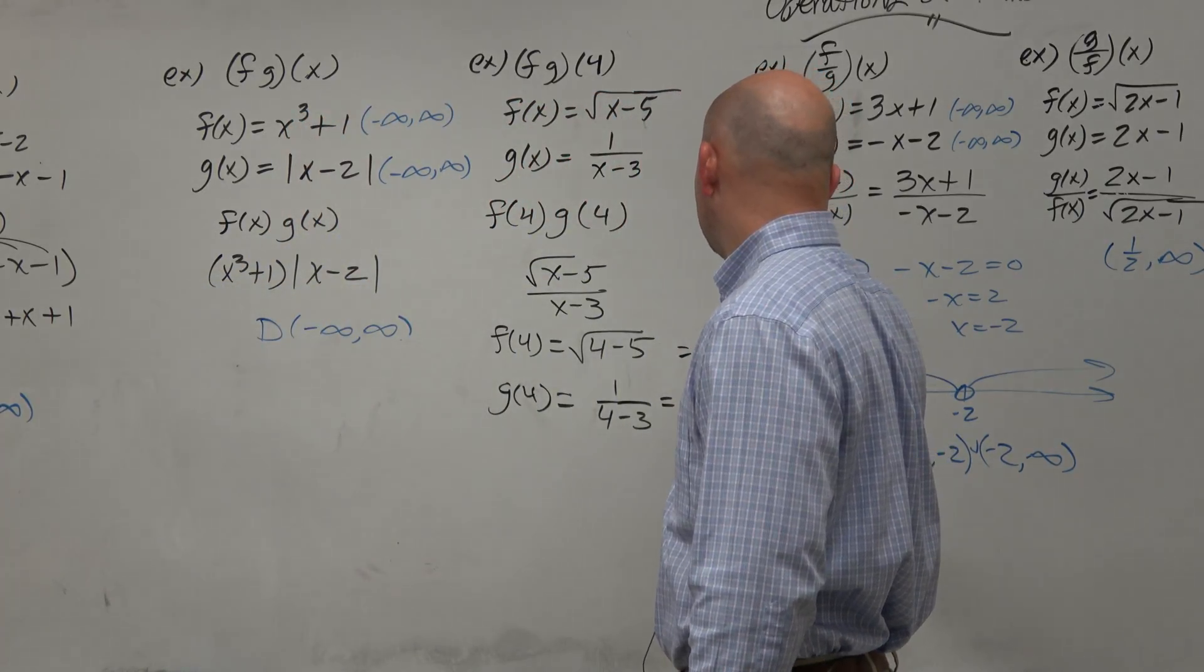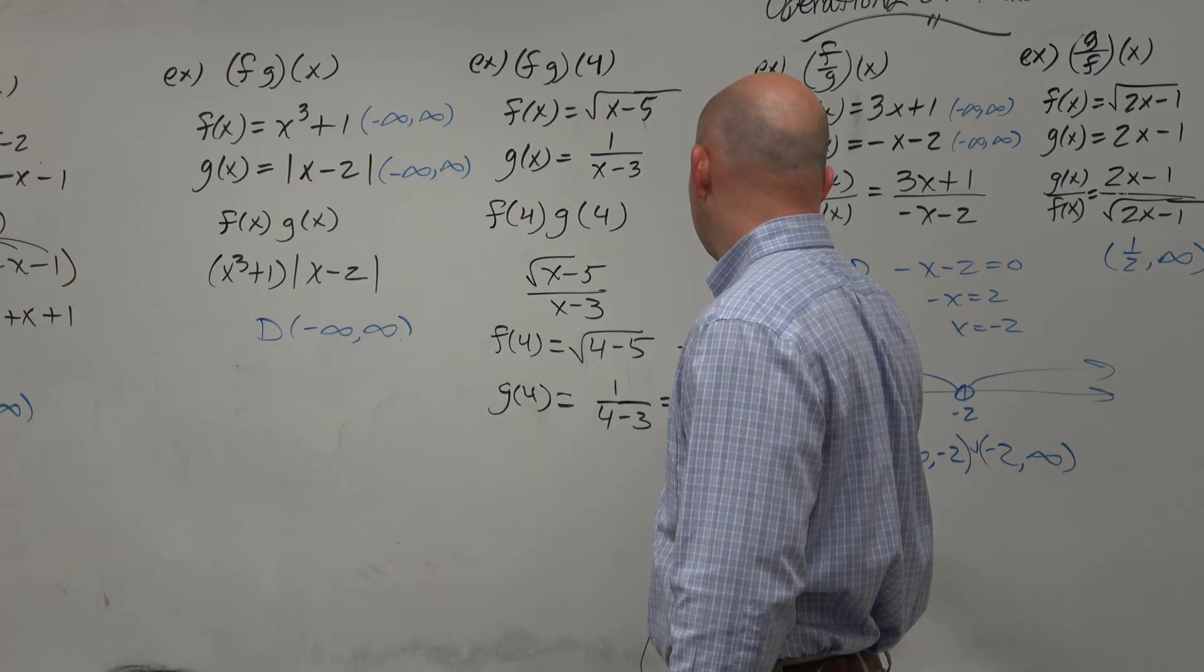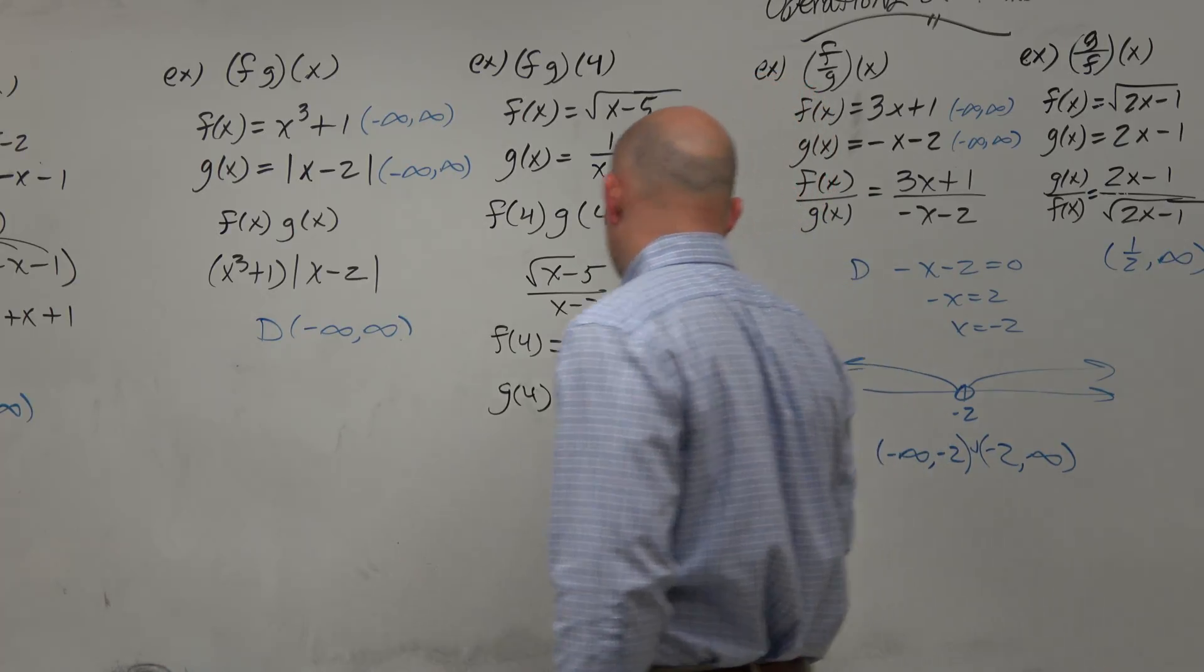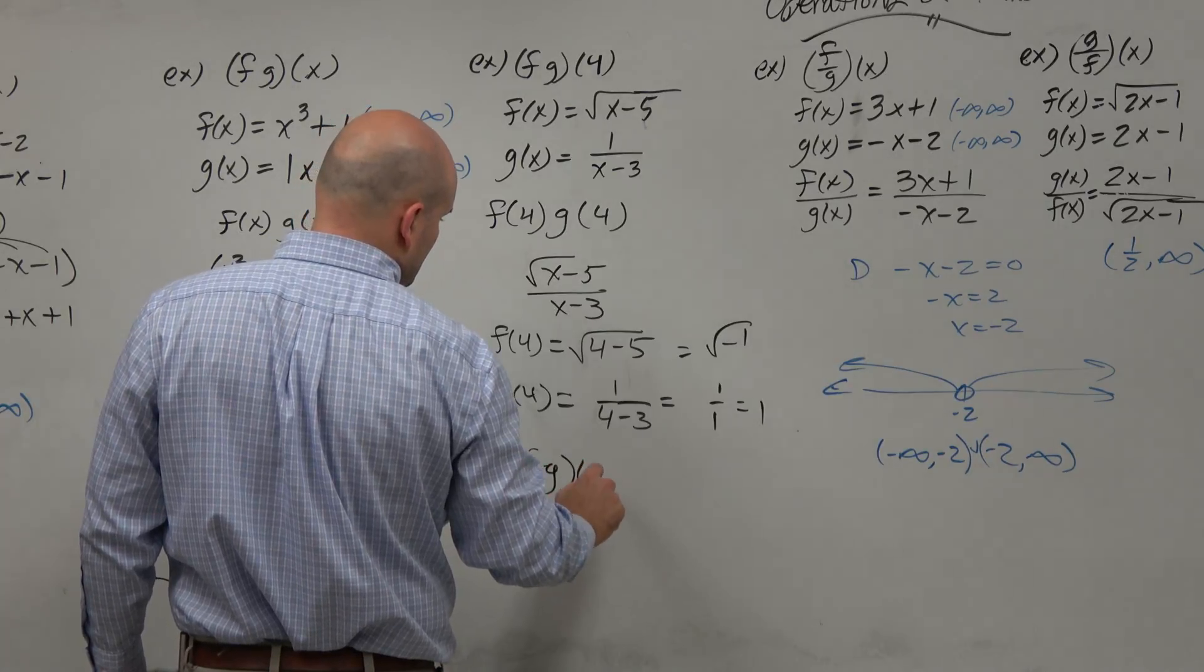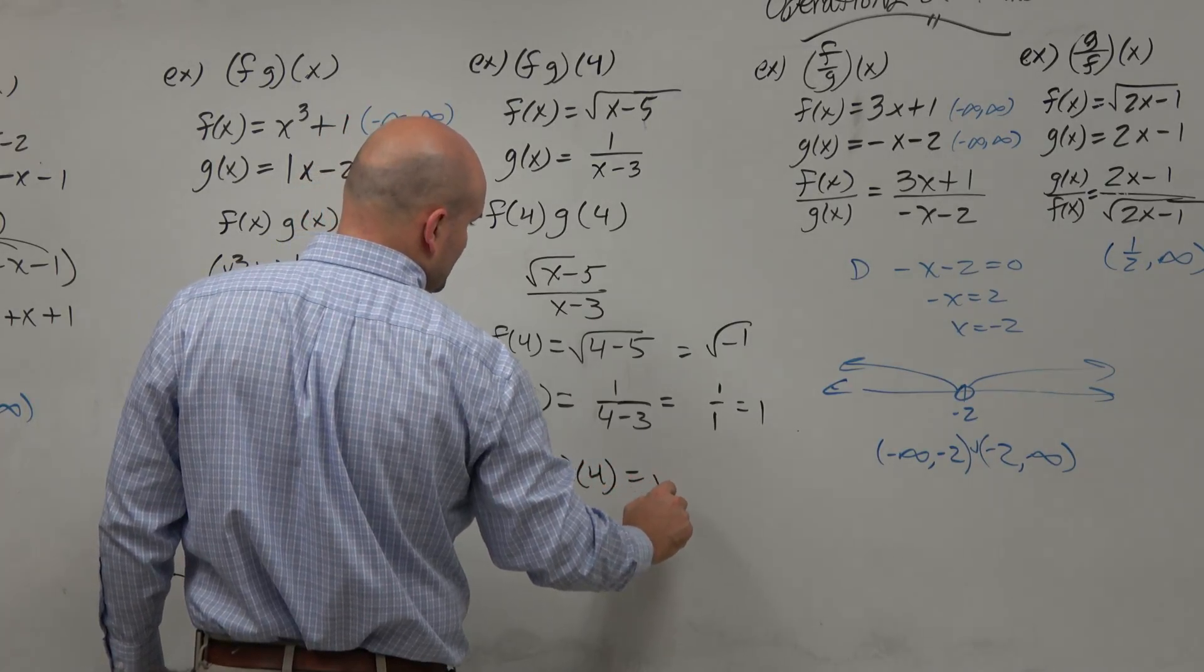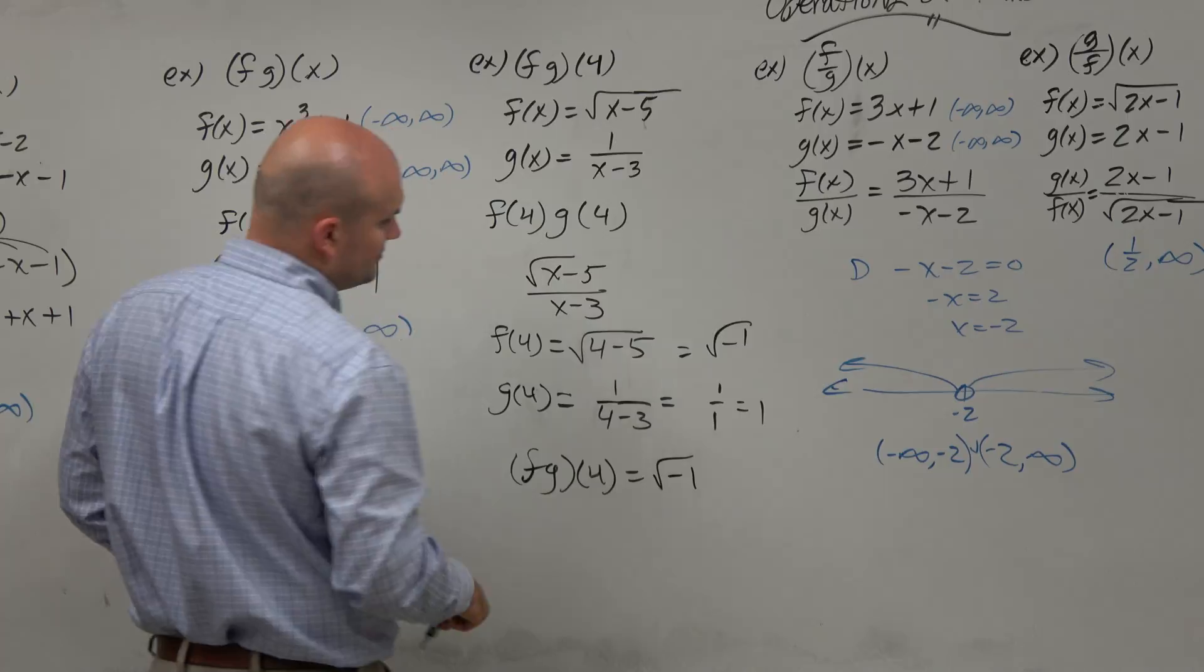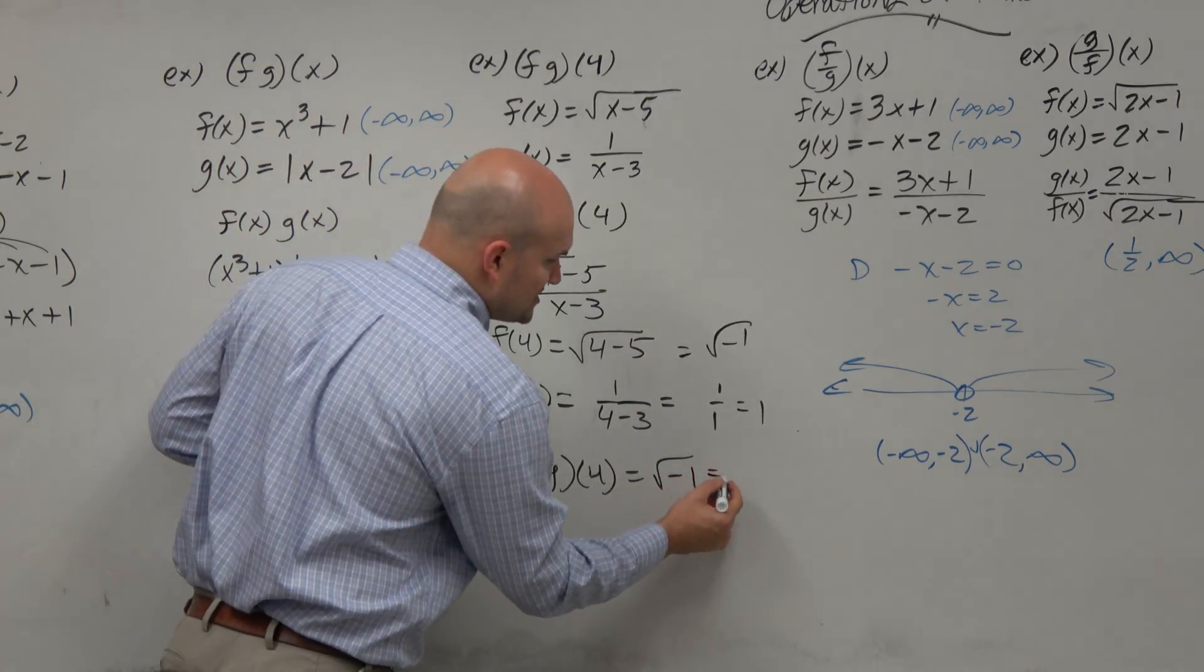Therefore, you would see that in this case we'd have 1 over 1, which is 1. So f of g of 4 is equal to the square root of negative 1, which, remember, in the complex number system is i.